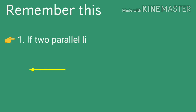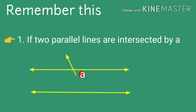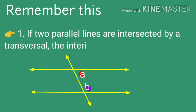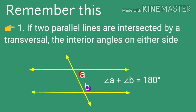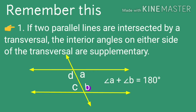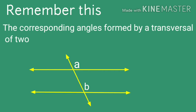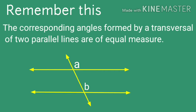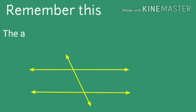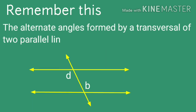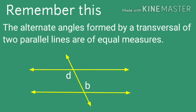Always remember this. First: if two parallel lines are intersected by a transversal, then the interior angles on either side of the transversal are supplementary. Second: the corresponding angles formed by a transversal of two parallel lines are of equal measure. Third: the alternate angles formed by a transversal of two parallel lines are of equal measure.